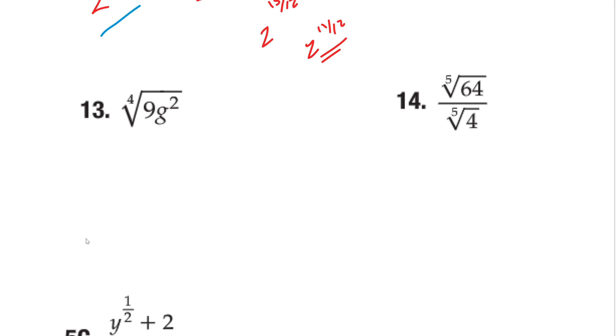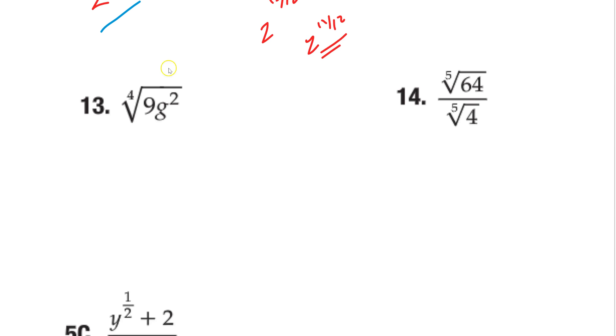Again, all this is kind of a preview to the next chapter. Let's rewrite this one. 9, the same thing as 3 squared, g squared, all to the 1 4th power, or 4th root. So we're going to multiply it out. And we get 3 is still 1 half, g is still 1 half, or if we want, square root of g, 3 and g. Either way is fine.